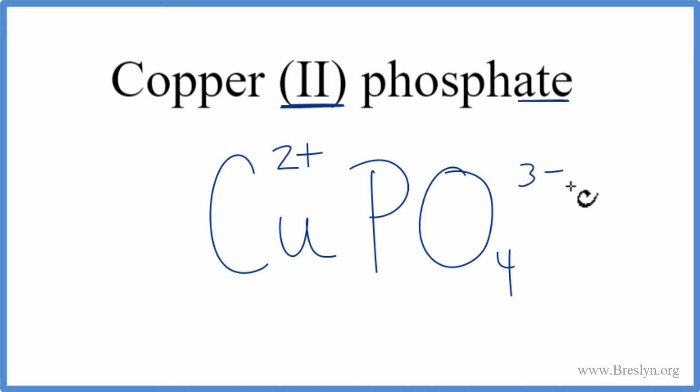So these should add up to zero, give us a net charge of zero, and they don't right now. So what we can do is use something called the crisscross method to figure this out, to change these subscripts. We could put a 3 down here, and move the 2 out here. Get rid of these.